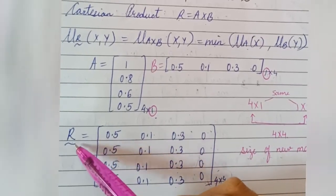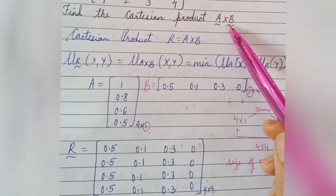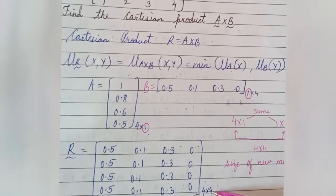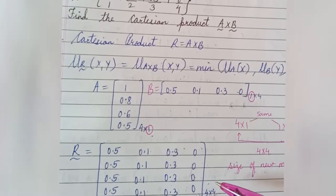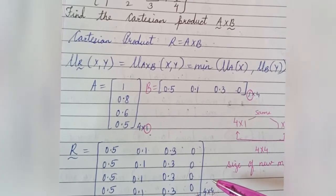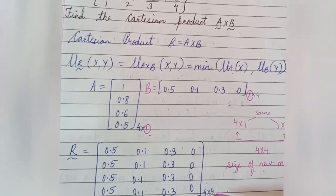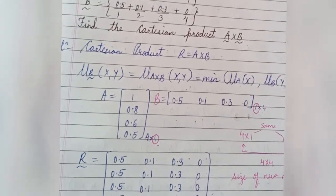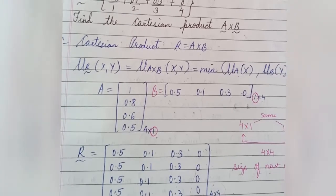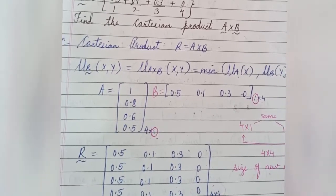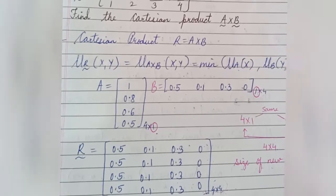This is the fuzzy relation R, which is the Cartesian product A cross B, of size 4×4. In this way you can calculate the Cartesian product of fuzzy sets A and B. Stay tuned for more updates on fuzzy systems — like and share with your friends, subscribe to my channel, thanks a lot for watching.